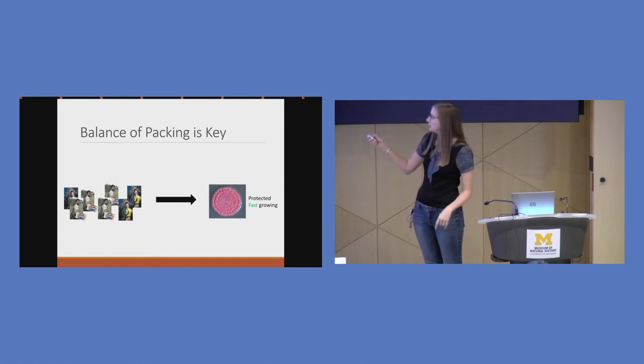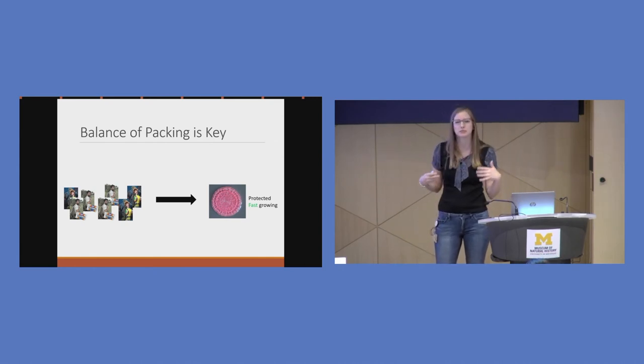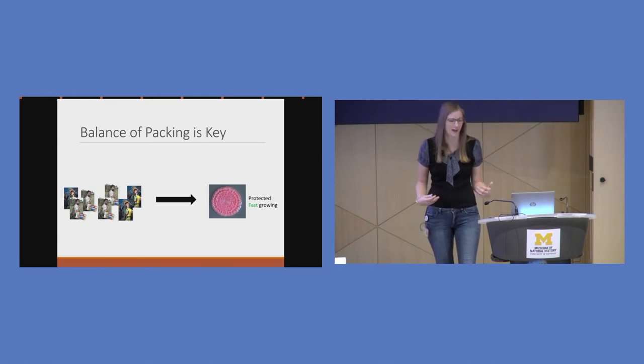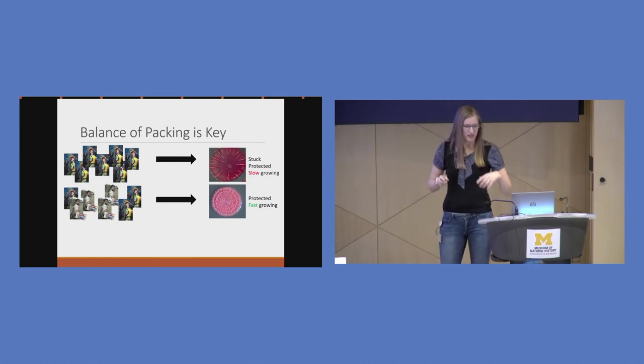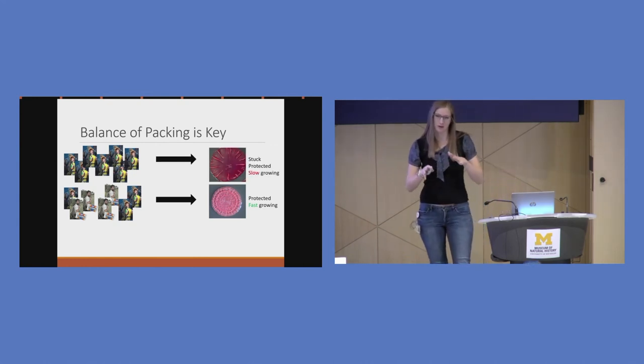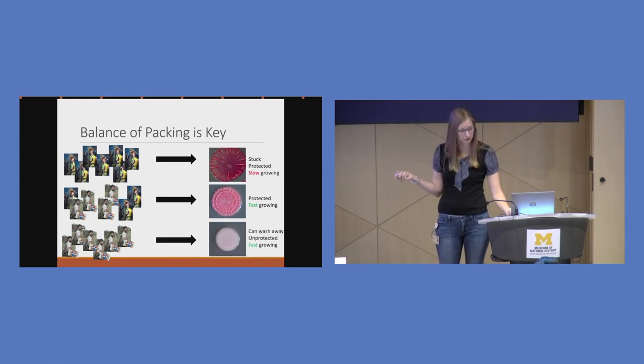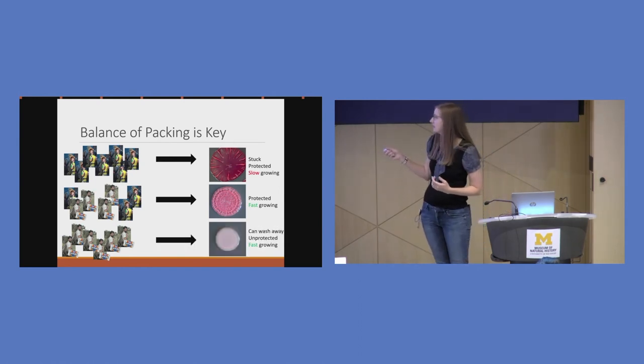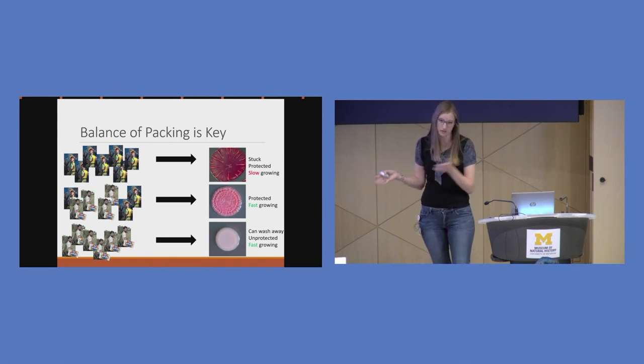Here again, we have our biofilms, and this time I used a red dye to show where the tent is. And if we have that good mix of underpackers and overpackers, we have this protected biofilm that grows really fast. But if I make some mutations so that we only have overpackers, we get this weird flat biofilm that's really stuck and we can't get rid of it and it grows really slowly. But on the other side, if we make it all marshmallow bringers, it's not making the tent anymore. We can wash it away, it's not protected, and it grows really fast, but who cares? If I can use water and get it off the surface, we're fine.